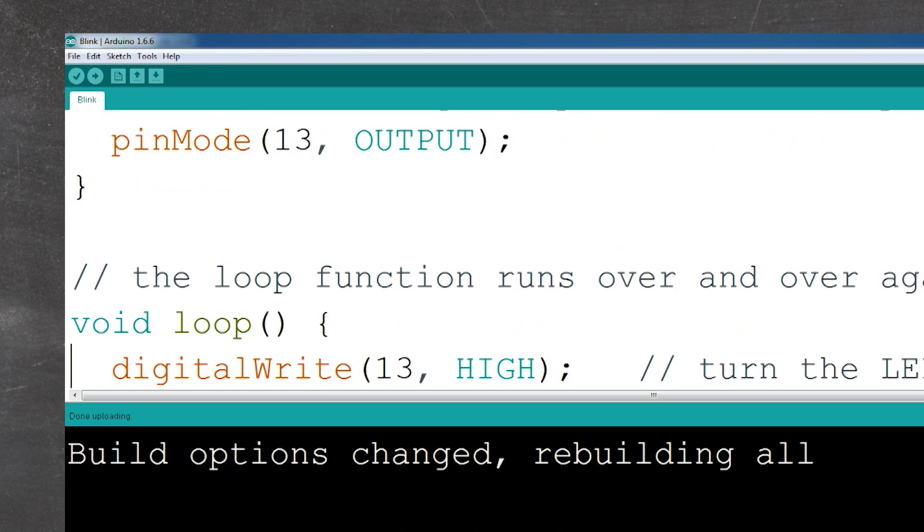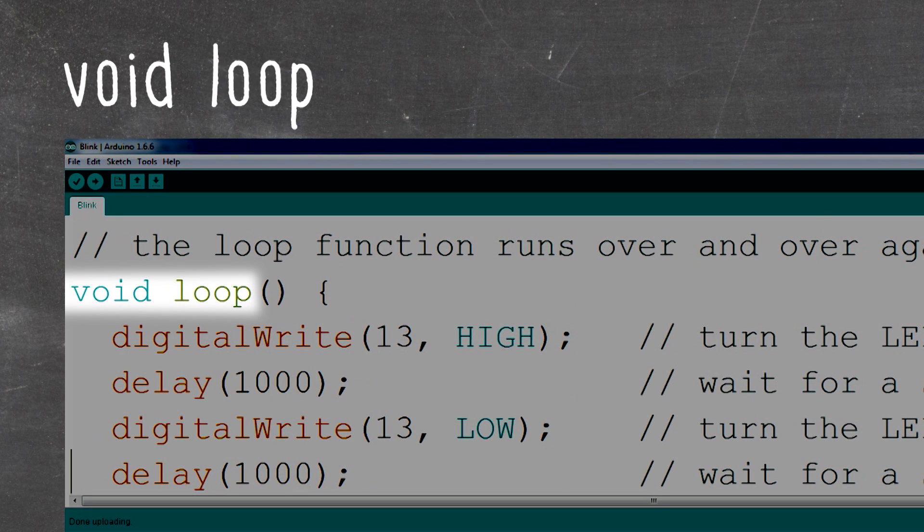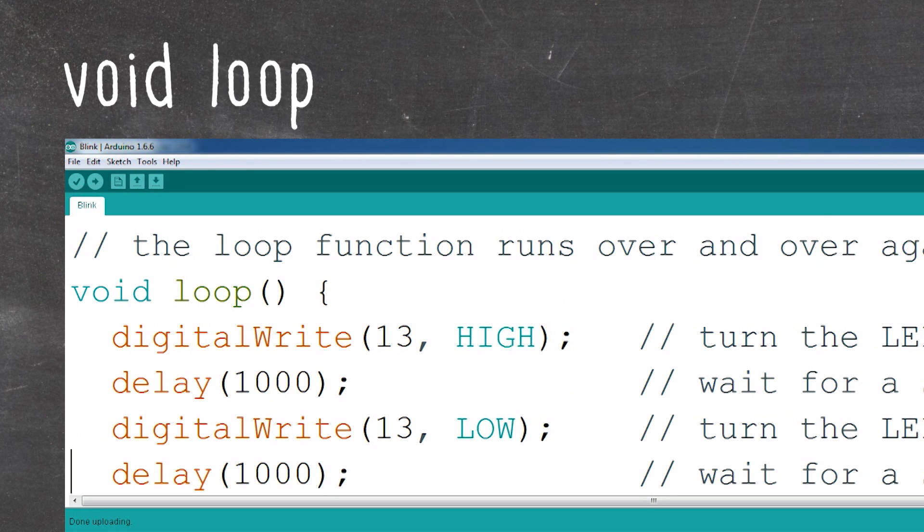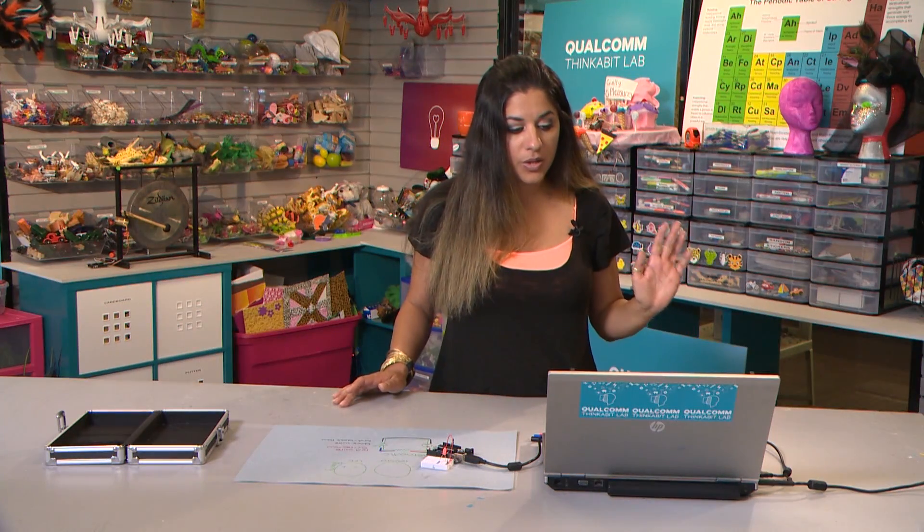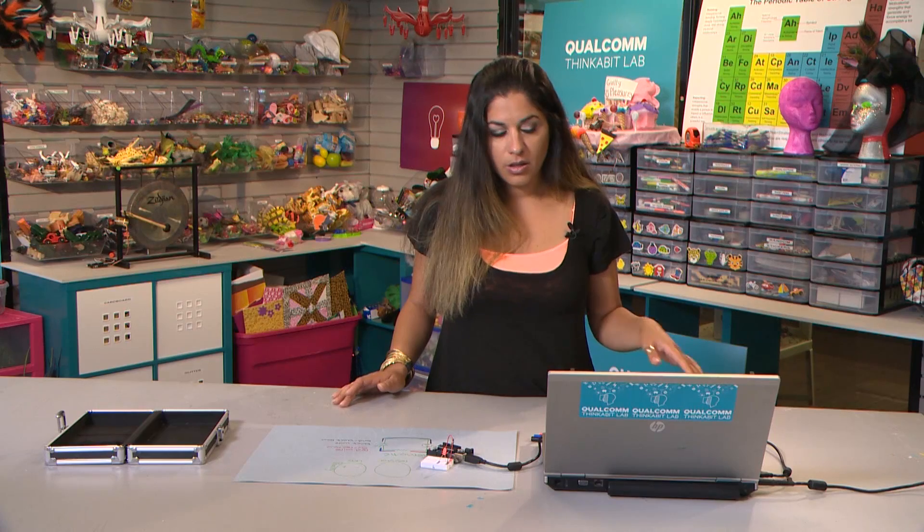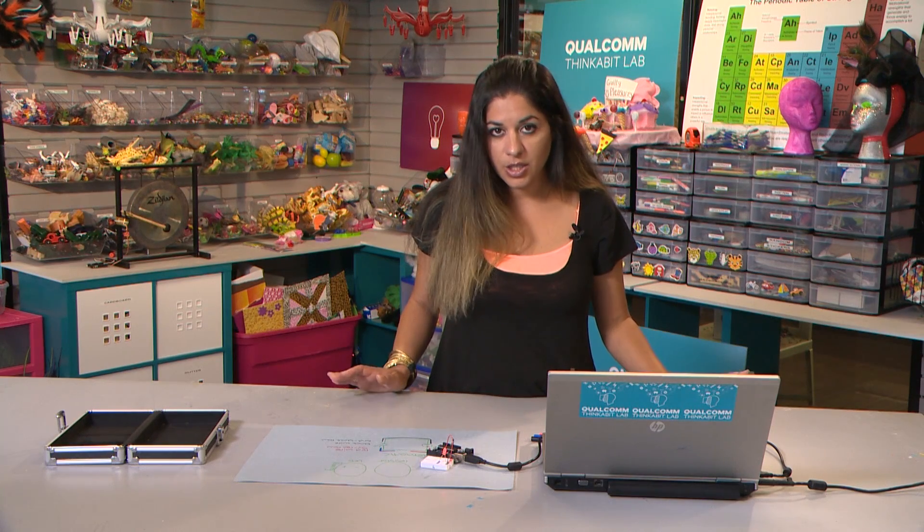All right. Going next, we have our void loop. Okay. So this is where the action happens. And again, kind of self-explanatory. It's a loop, which means it's going to go through these lines of code over and over and over again, like a loop. It's just going to keep going until you unplug it. It will never stop reading that code. All right. So it's going to execute each line at a time.